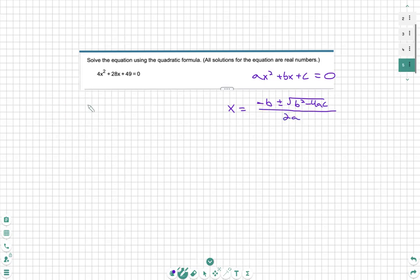That's it. So for this equation and problem over on the left, we're going to first rewrite a is equal to 4, b is equal to 28, c is equal to 49, and that's very important.